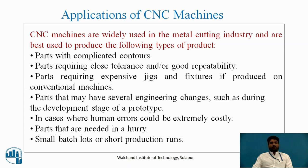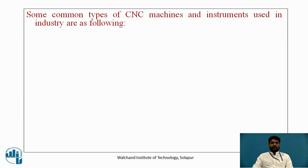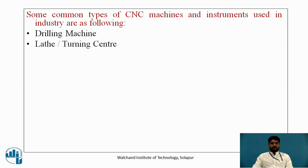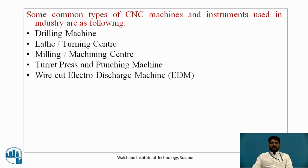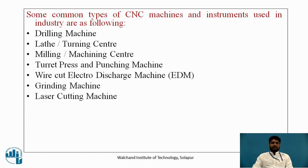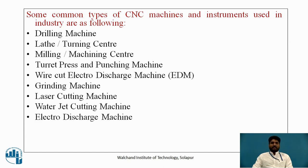CNC is also suited for small batch lots or short production runs. Common types of CNC machines and instruments used in the industry include: drilling machines, lathe or turning centers, milling or machining centers, turret press and punching machines, wire cut electro-discharge machines (EDM), grinding machines, laser cutting machines, water jet cutting machines, electro discharge machines, coordinate measuring machines, and industrial robots.